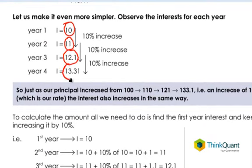The interest is also increasing by 10 percent. So 10 increased by 10 percent gives you 11, 11 increased by 10 percent gives us 12.1, 12.1 increased by 10 percent gives us 13.31.